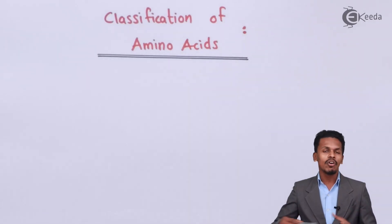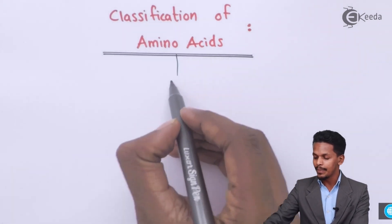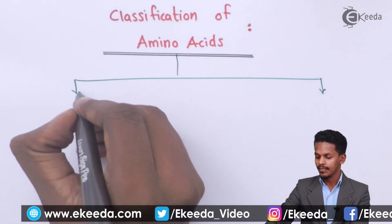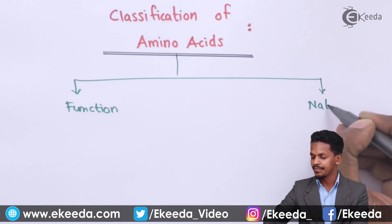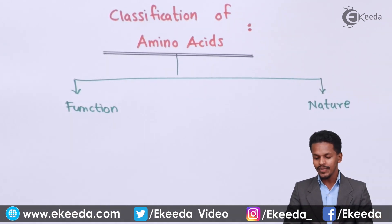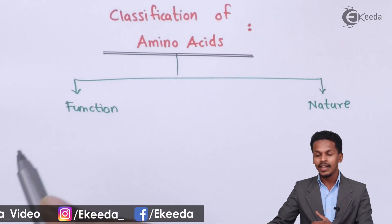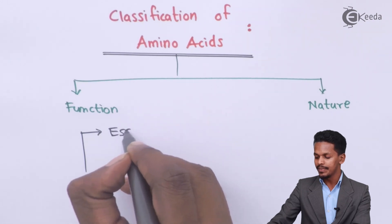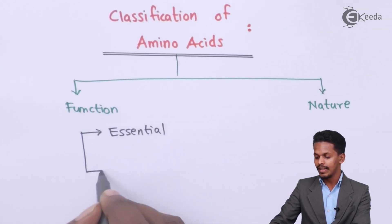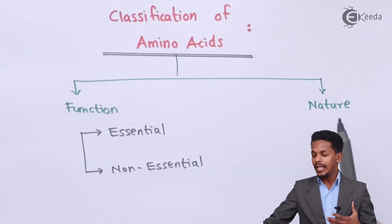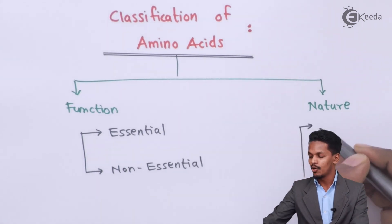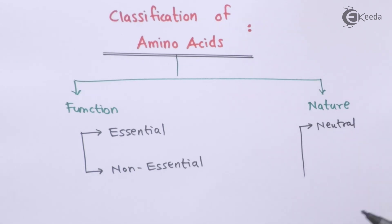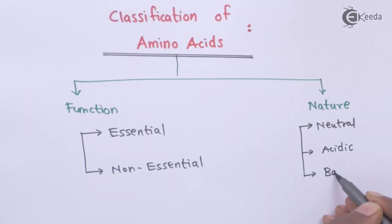So friends, talking about the classification of alpha amino acids — amino acids are basically divided into two types, depending on their function and their nature. Talking about function, they are divided into two types: essential amino acids and non-essential amino acids. Talking about nature, they are divided into three types: neutral amino acid, acidic amino acid, or basic amino acid.